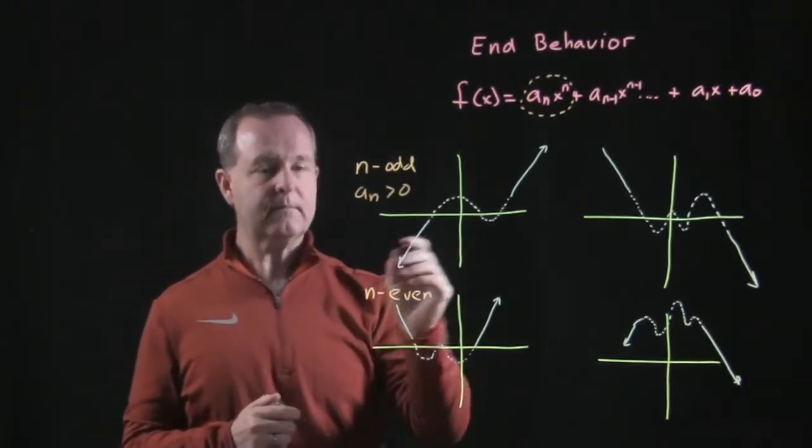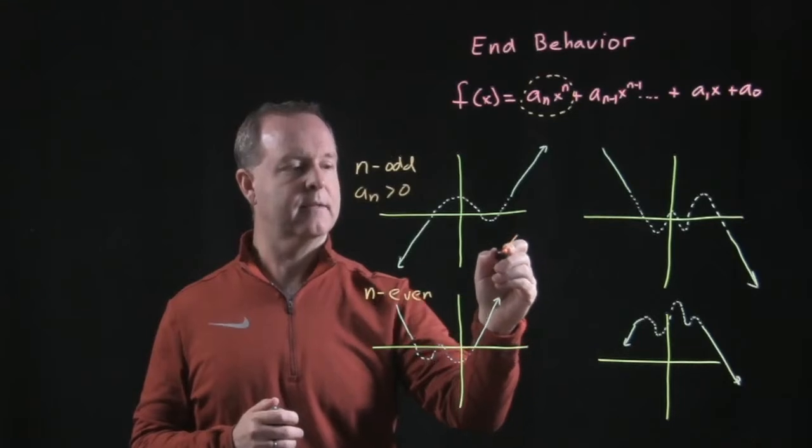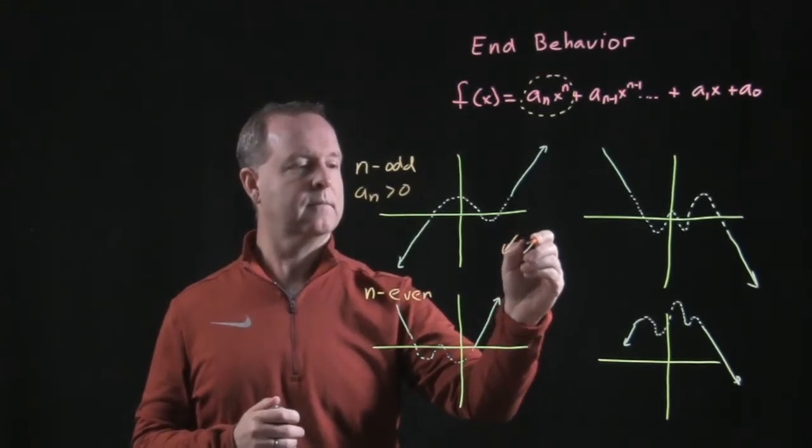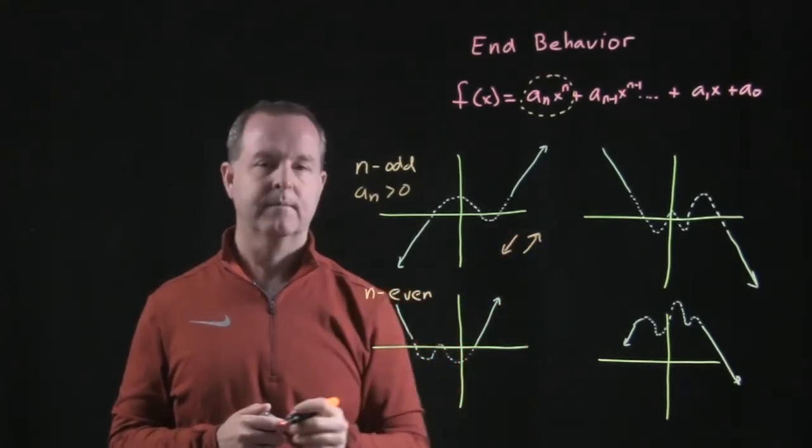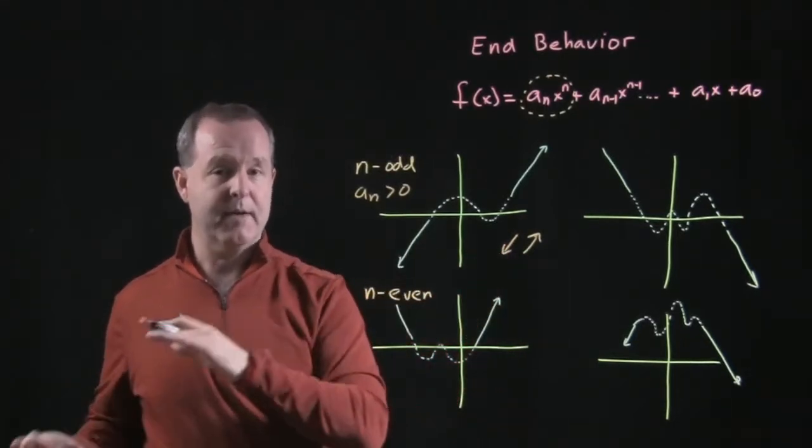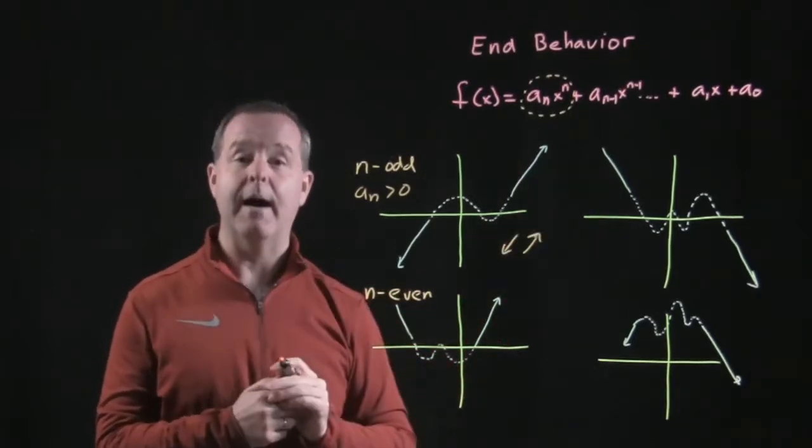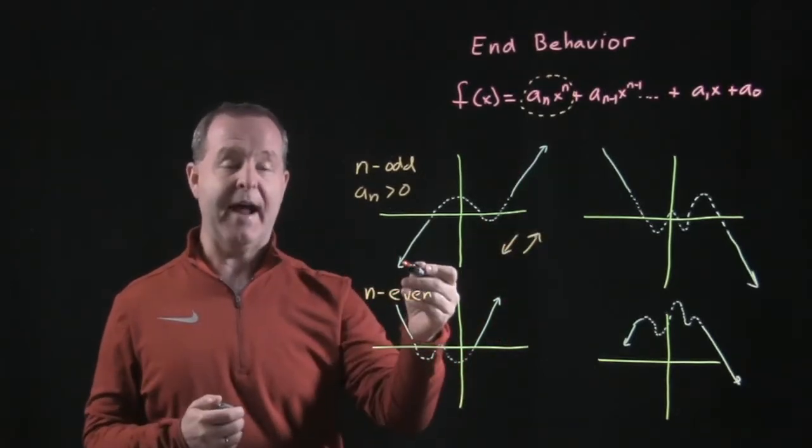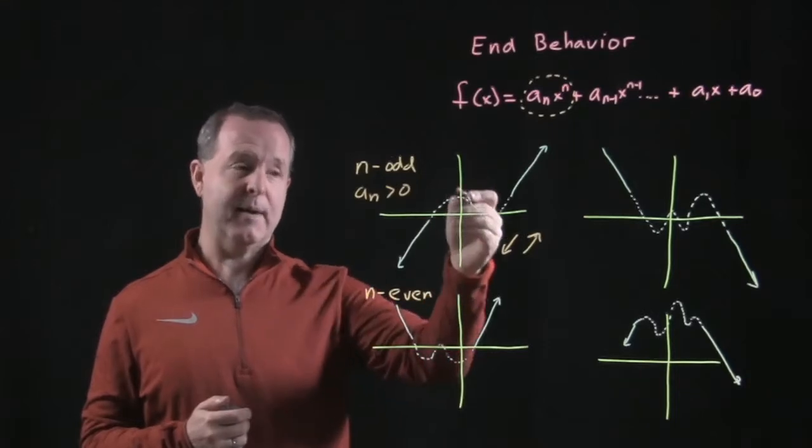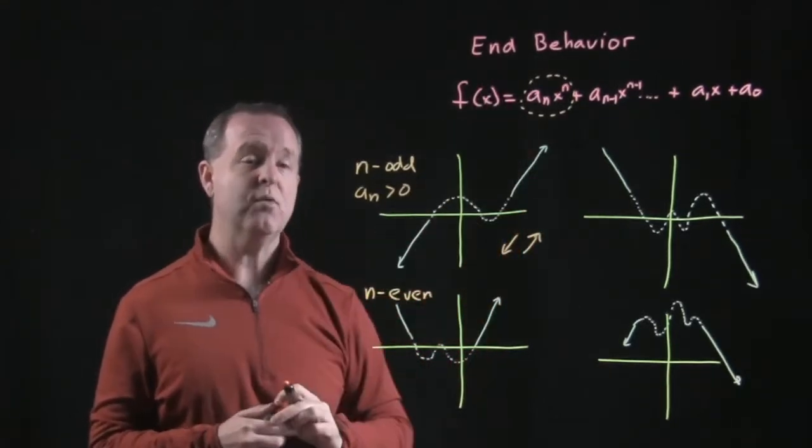So what does this tell me? It tells me my end behavior and I might designate it like this. When I look towards the left, my graph is coming from below, and if I look to the right, my graph is going up high. So that tells me my values start off very low and as my graph continues, my values gain steam and continue growing.